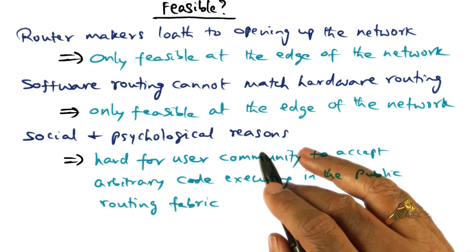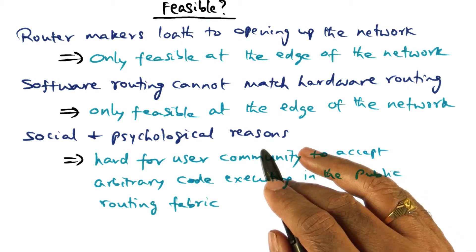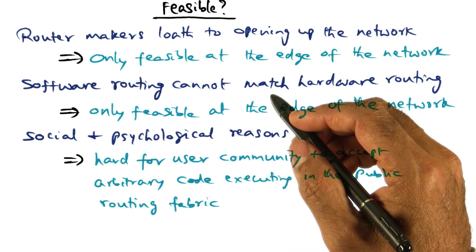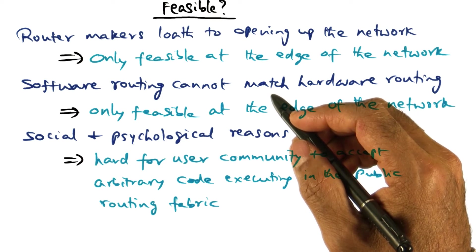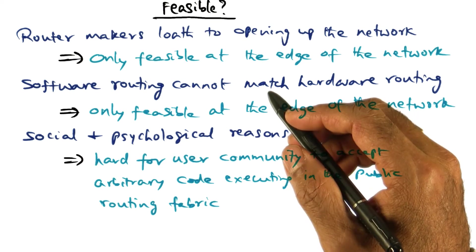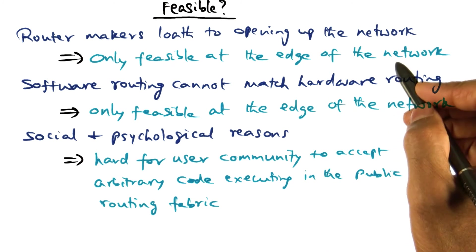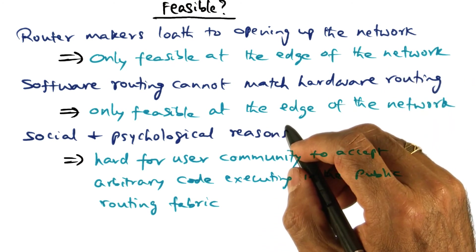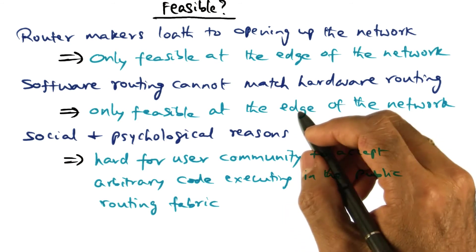On the other hand, the idea of virtualizing the network flow is very appealing. And if you put together the two thoughts that I had - one is the idea that you can virtualize the network, and the second that active networks is only feasible at the edge of the network - that brings up a very interesting proposition, which I'm going to mention in my concluding remarks.